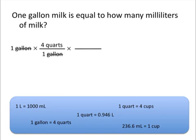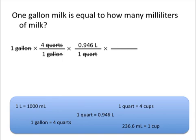We need to use another conversion factor that has units of quarts, and we want quarts to go on the bottom so they will cancel each other out. Looking at the conversion factors given, we can see that 1 quart is equal to 0.946 liters. Because we already have quarts on the bottom, we know that 0.946 liters must go on top. This allows us to cancel out the units of quarts. But we're still not in milliliters yet, so we need to do at least one more step, and we write the units we need to cancel out directly on the bottom.